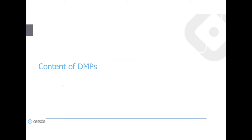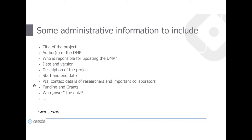What should be the content of a DMP? It's recommended to start with administrative information such as the title of the project, the authors of the DMP, who is responsible for updating it, the date and version, project description, start and end dates, principal investigators and their contact details, funding and grant numbers, and also who actually owns the data.